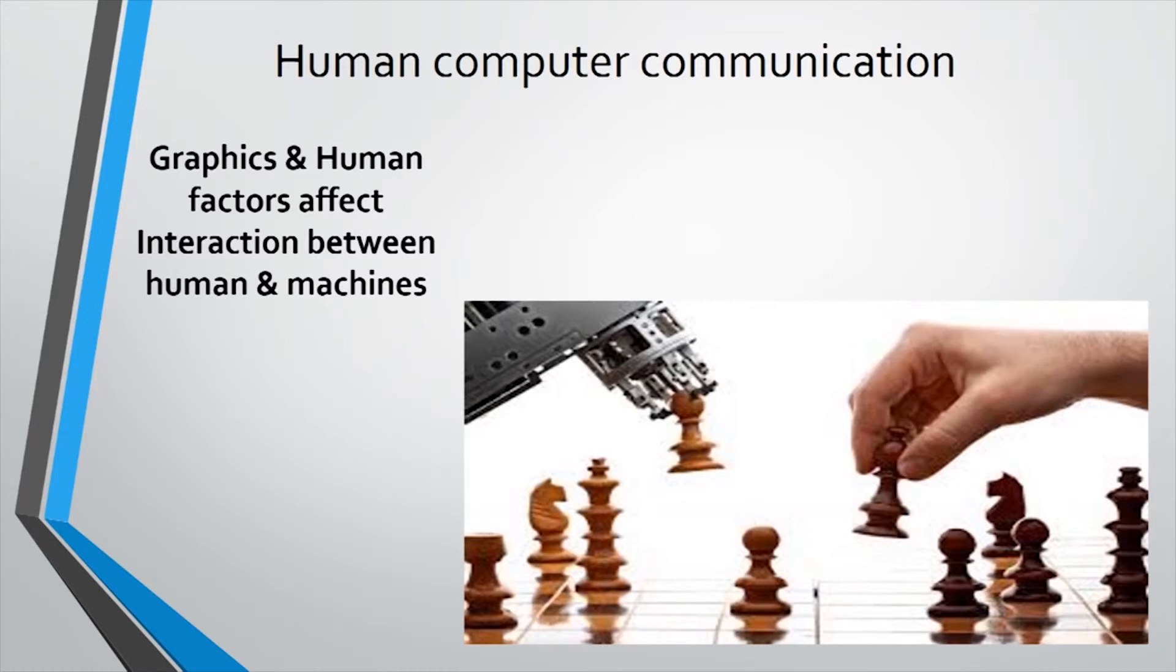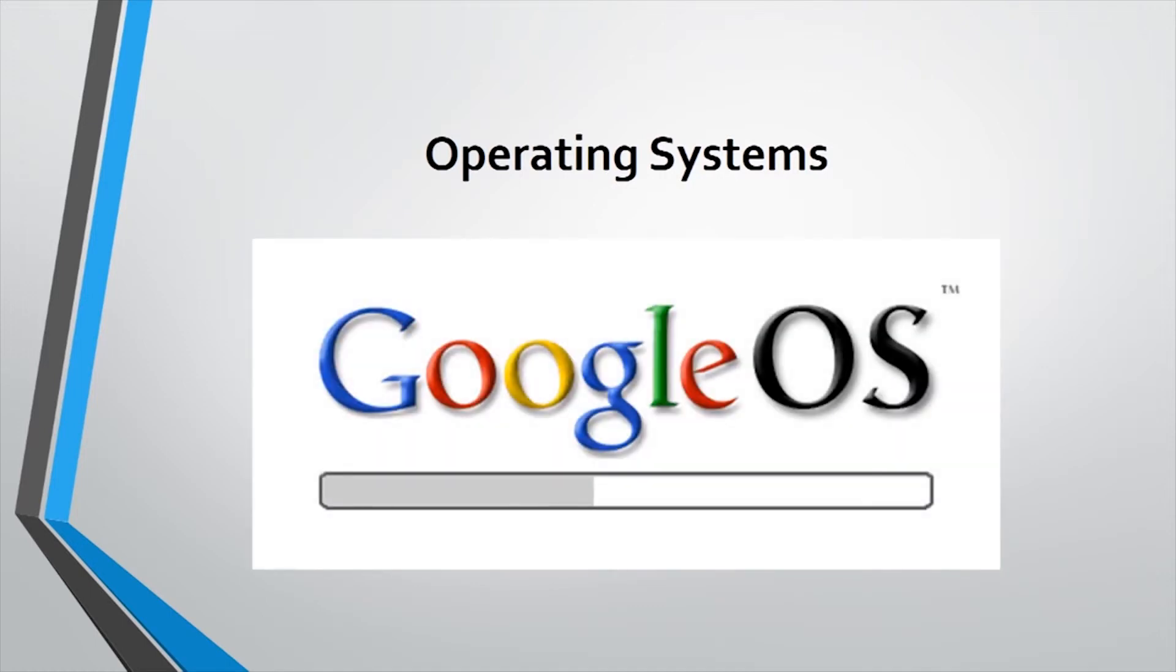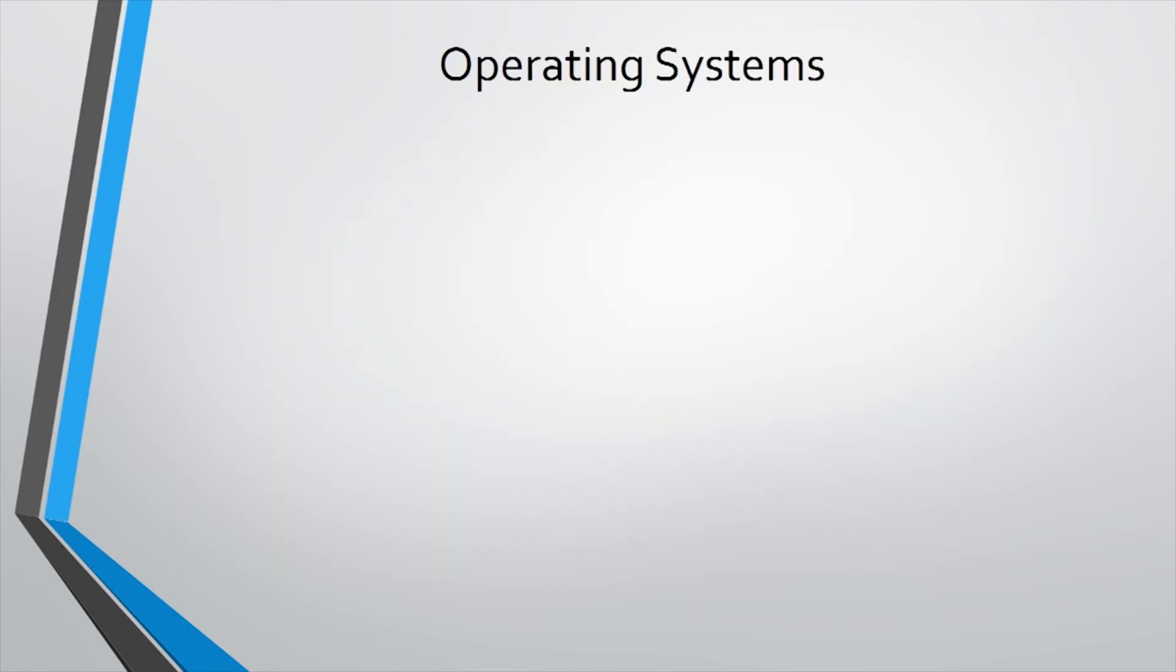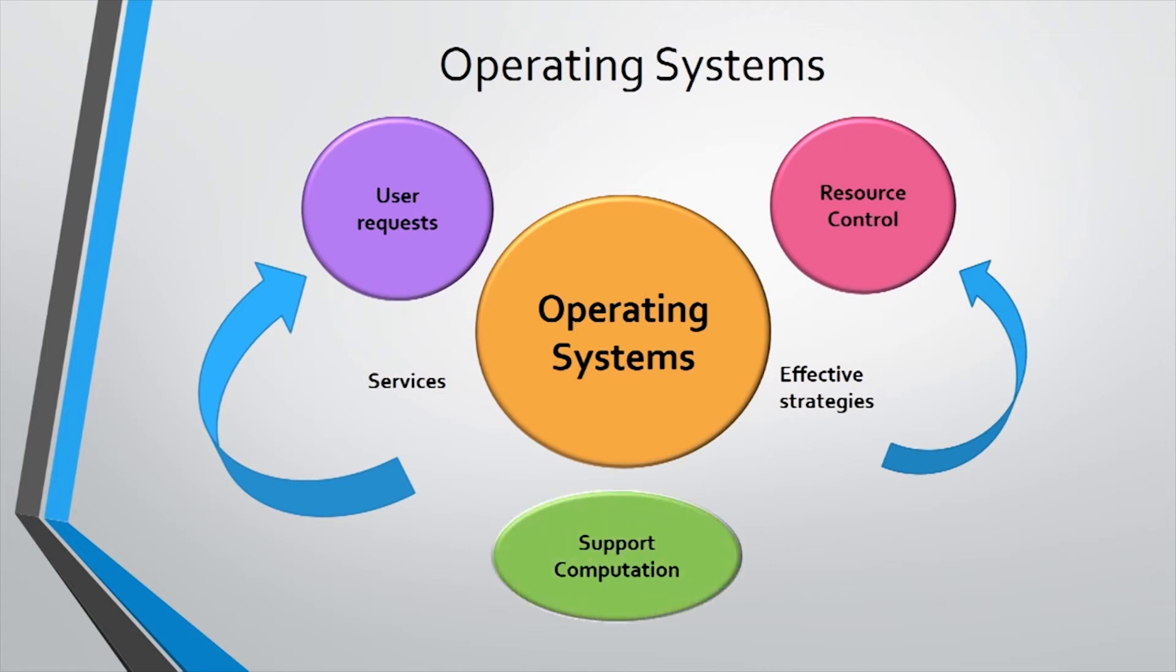Number 6. Operating systems. This area deals with control mechanisms that allow multiple resources to be efficiently coordinated during the execution of programs. Included are appropriate services of user requests, effective strategies for resource control, and effective organization to support distributed computation.